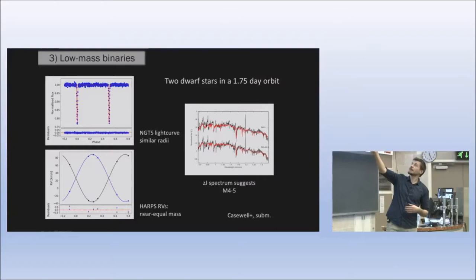With the NGTS data we can calculate the radii. In this case we have two dwarf stars in a 1.75 day orbit orbiting each other. They have very similar radii. We see two eclipse events of almost the same depth as one star goes in front of star two and vice versa.